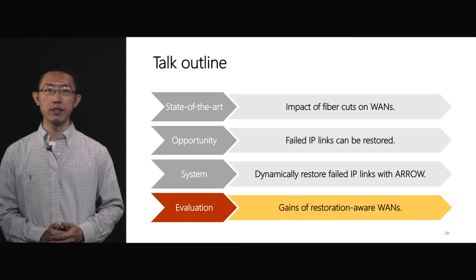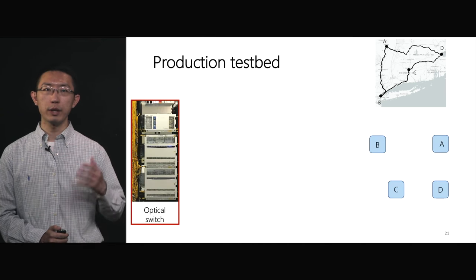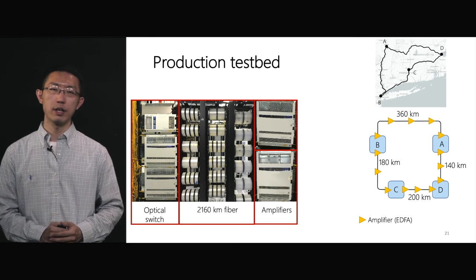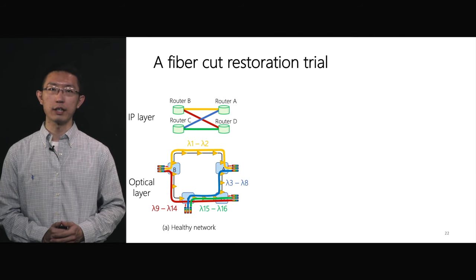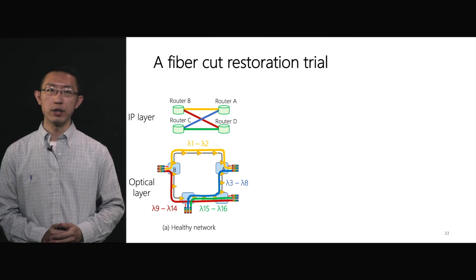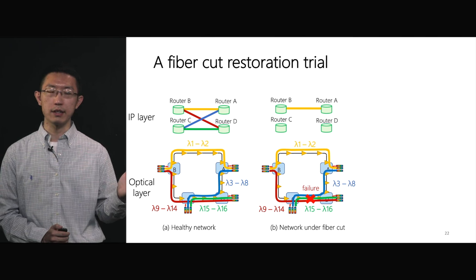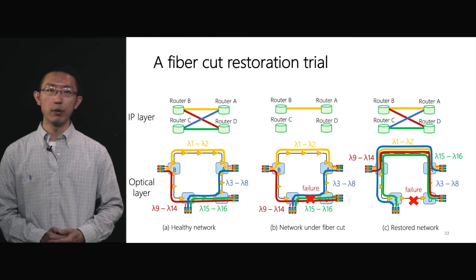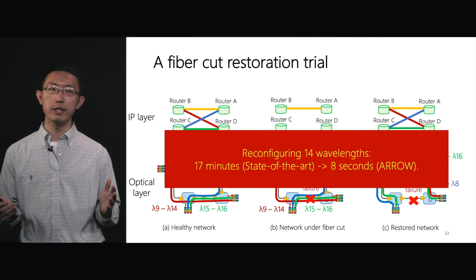Finally, we evaluate the gains of restoration-aware WANs. We build a production-level optical network testbed to emulate part of the production WAN. It includes four optical switches connected by over 2,000 km of optical fibers, 34 amplifiers deployed on these fiber links, and 16 pairs of optical transponders to provision wavelengths. We run a fiber cut restoration trial on the testbed. Initially, there are 16 wavelengths running on the optical layer supporting an IP layer topology of four IP links. We simulate a fiber cut where the fiber between C and D is cut, causing 14 wavelengths and their corresponding IP links AC, BD, and CD to be lost. We then use ARROW to reconfigure the failed 14 wavelengths to healthy fibers. Our experimental results show that ARROW can reduce the reconfiguration delay from 70 minutes to 8 seconds compared with the state-of-the-art approach.